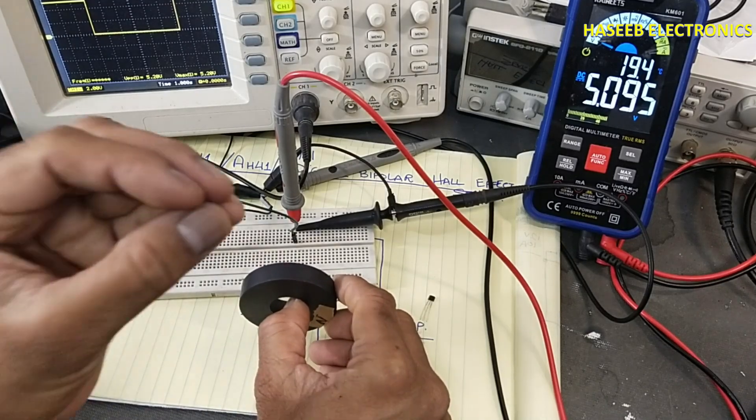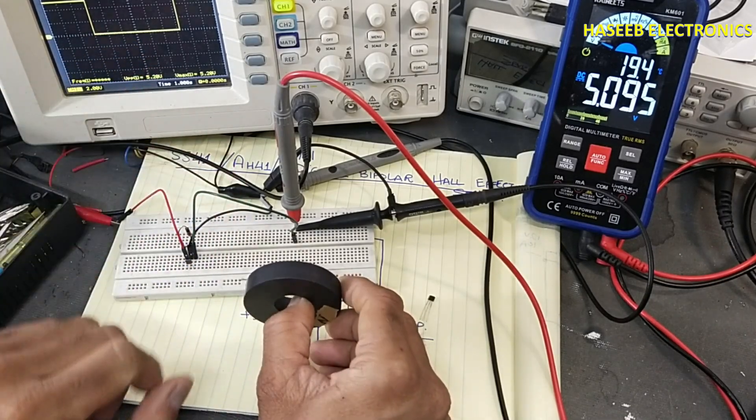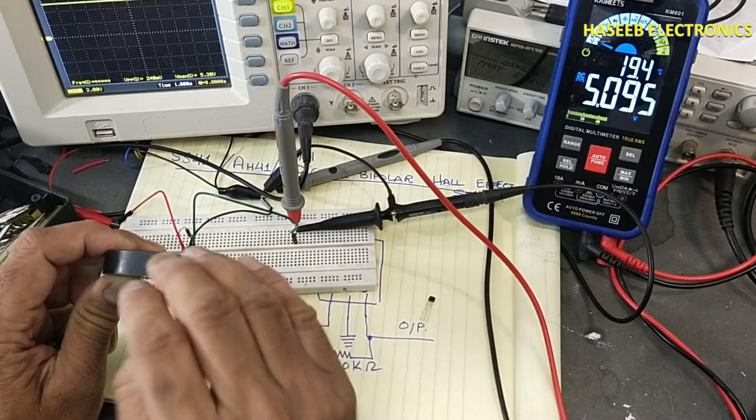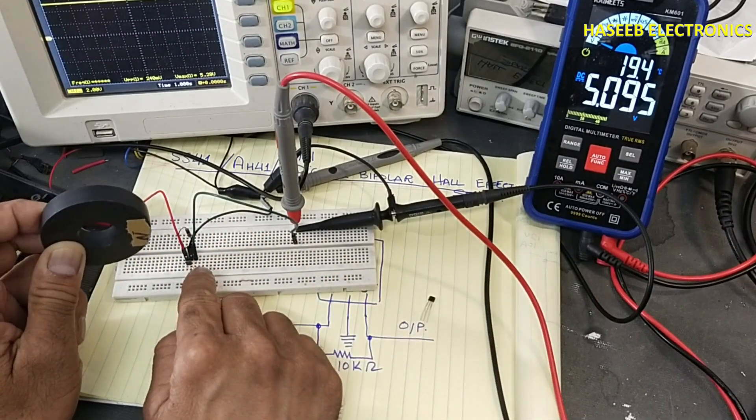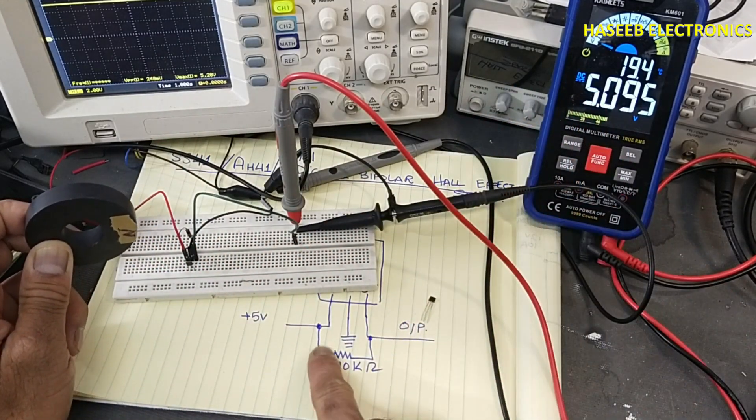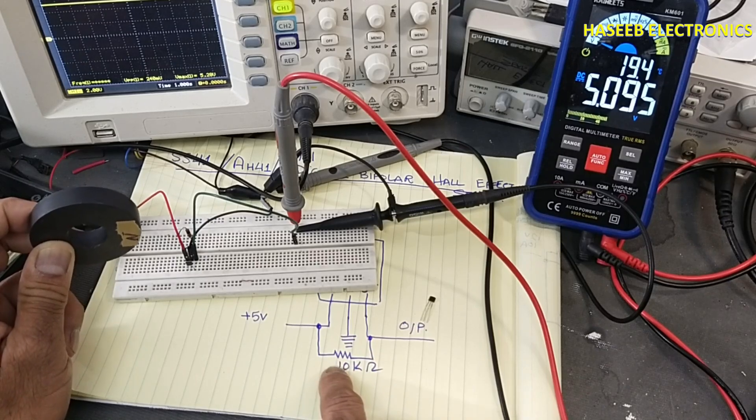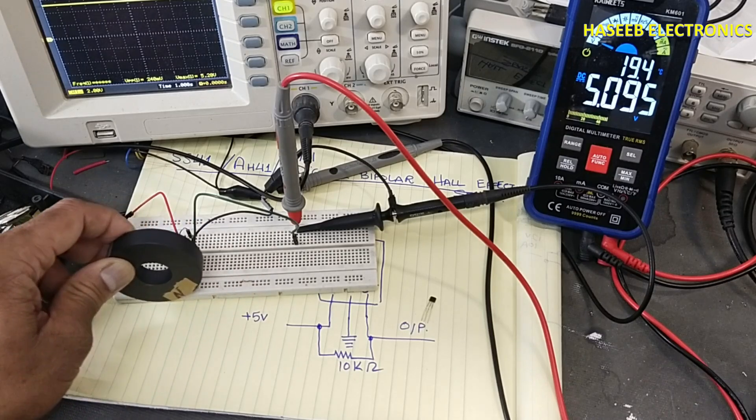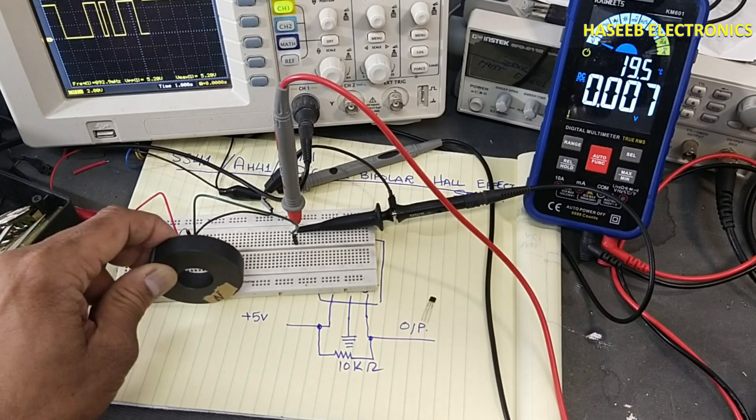The magnetic field intensity will decrease. The output will high when the magnetic pole is away from the sensor. At that time, output will remain high. Why? Because it have pull-up resistor here. When magnet field is high or it is within range.